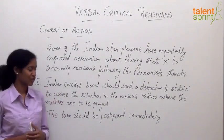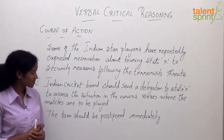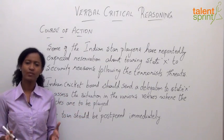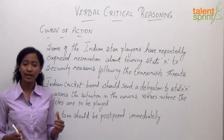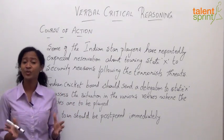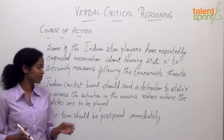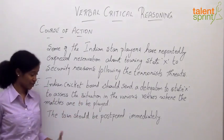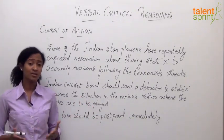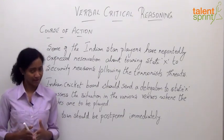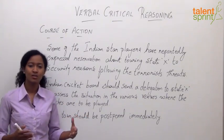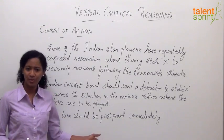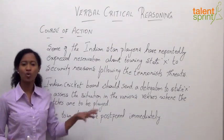Looking at the first course of action — the Indian cricket board should send a delegation to state X to assess the situation in the various venues — this proves to be pretty logical. Some players have expressed concern, and we still want to check if the current situation continues to pose a threat or not. So the best logical solution is to send someone to assess the situation. The second course of action — the tour should be postponed immediately — doesn't serve a purpose or bring a real solution. Without verification of the current status, why would you want to postpone the tour? It might incur a lot of cost and time. That's not a very logical solution.